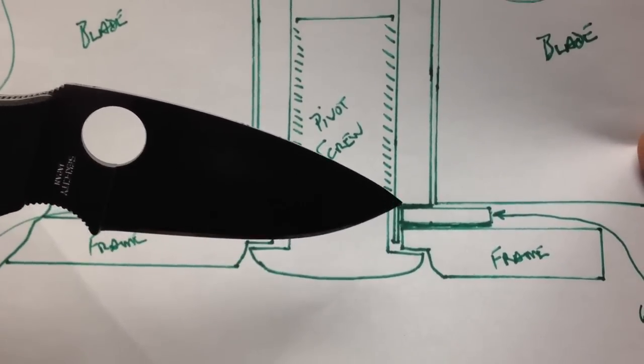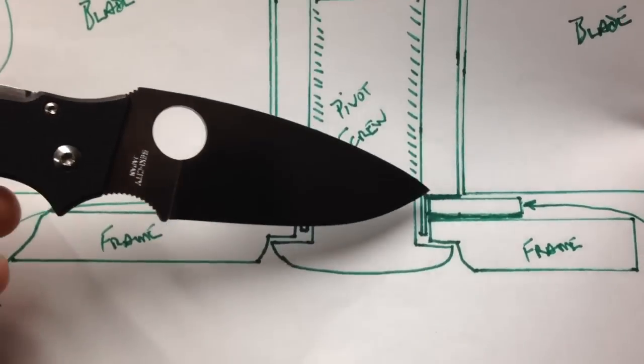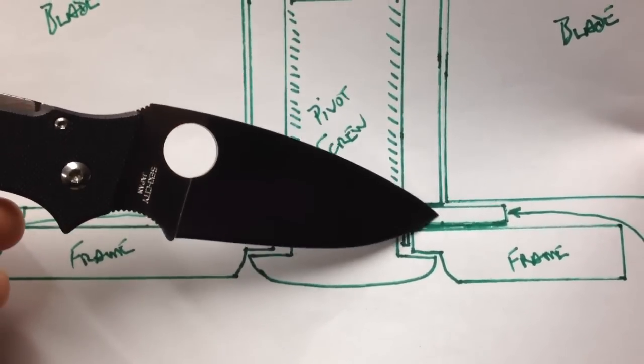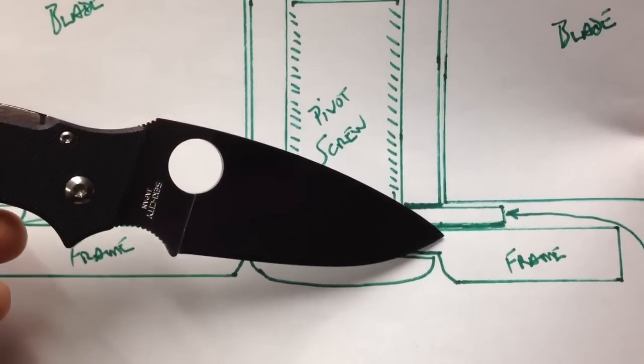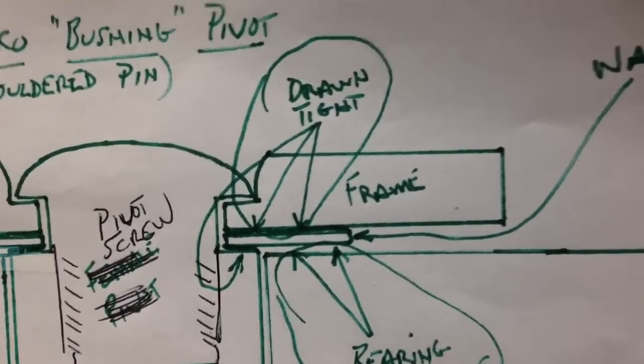And then a shouldered pin that actually comes through the frame and then this shoulder captivates this washer. So what we have are a tight surface here, a tight surface here, and then if you see this gap I kind of drew arrows up here so you can tell what I'm talking about.